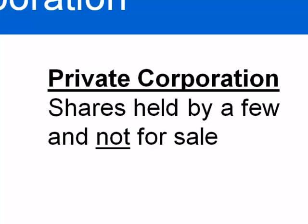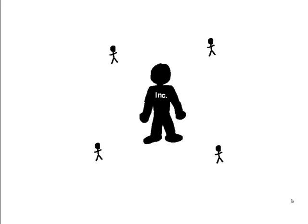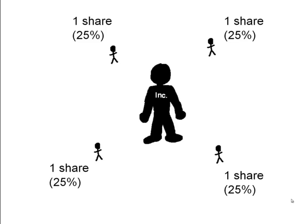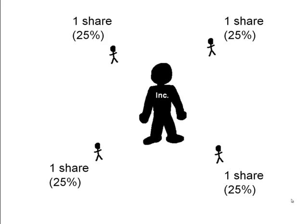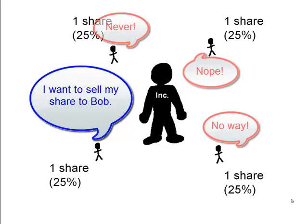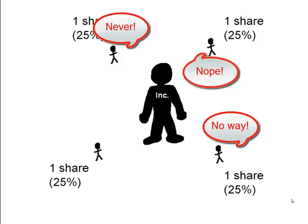A private corporation is a corporation where the shares are held by only a few people and those shares are not available for sale. For example, the corporation might have four owners, each with one share, for a total of four shares at 25% ownership each. It's not easy for them to sell their shares to another party because the other three shareholders would have to agree on who they were going to accept into the corporation.